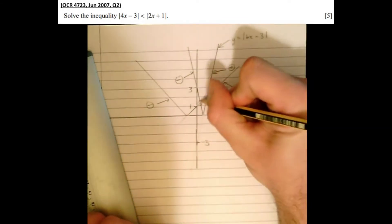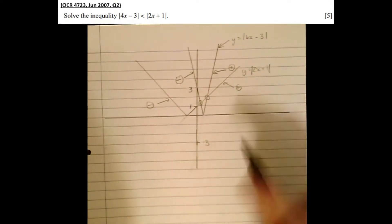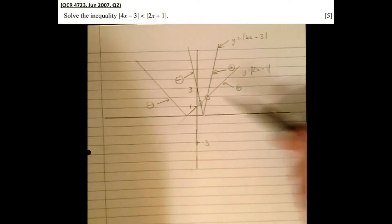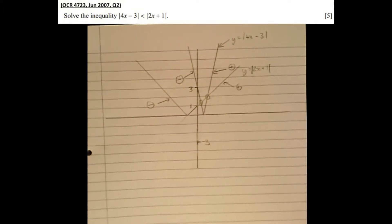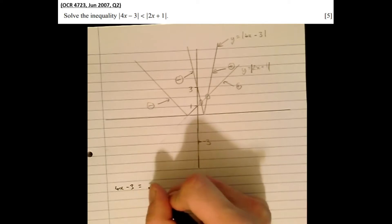We can see there's two points where the graph crosses, there and there. It crosses where both positive parts cross. So we've got 4x minus 3, the positive part of that, equaling 2x plus 1.